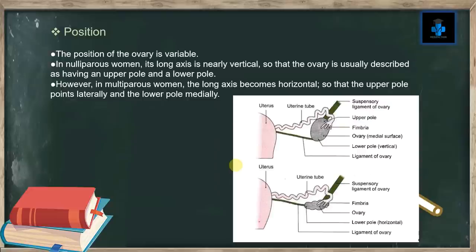Position: the position of the ovary is variable. In an early parous woman, its long axis is nearly vertical, so that the ovary is usually described as having an upper pole and a lower pole.